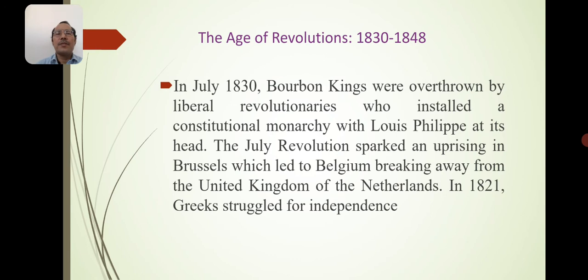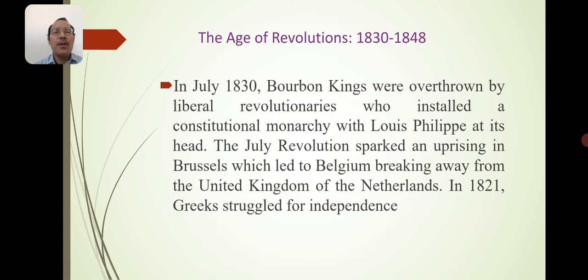The Age of Revolution, 1830 to 1848: In July 1830, the Bourbon kings were overthrown by liberal revolutionaries who installed a constitutional monarchy with Louis Philippe at its head. The July Revolution sparked an uprising in Brussels which led to Belgium breaking away from the United Kingdom of the Netherlands. In 1821, Greeks struggled for their independence from the Ottoman Empire.